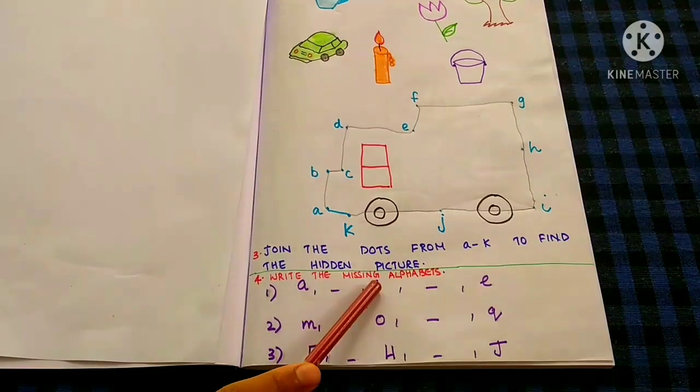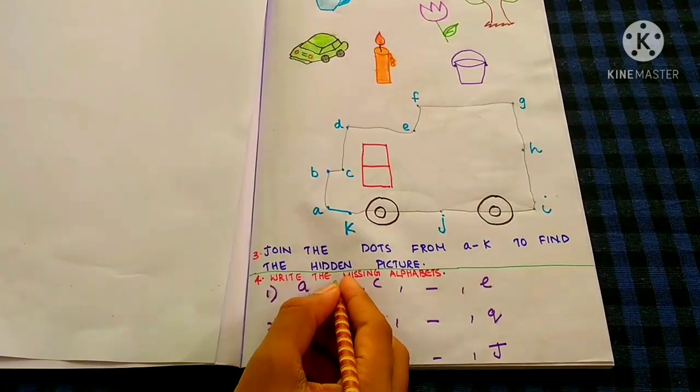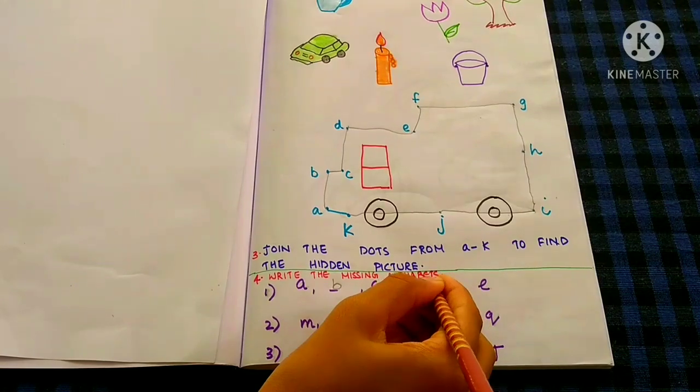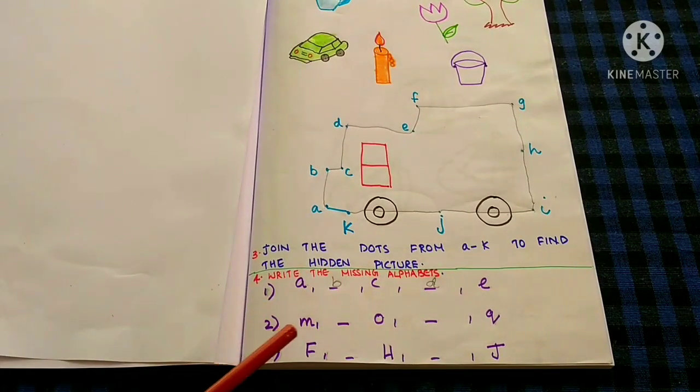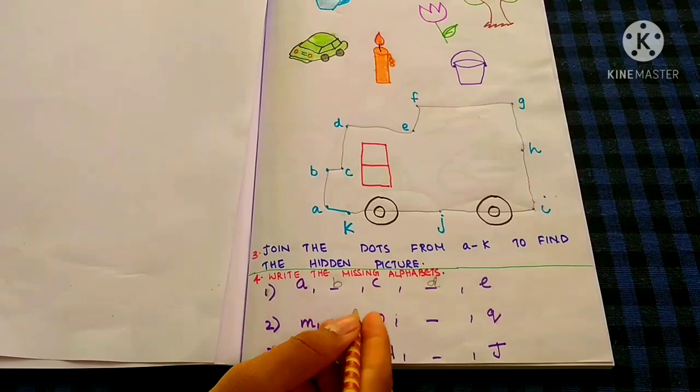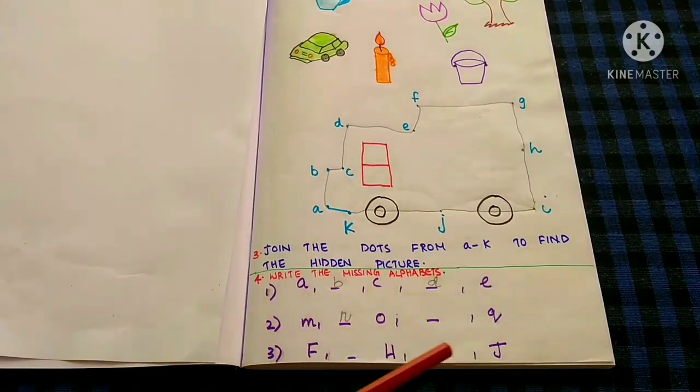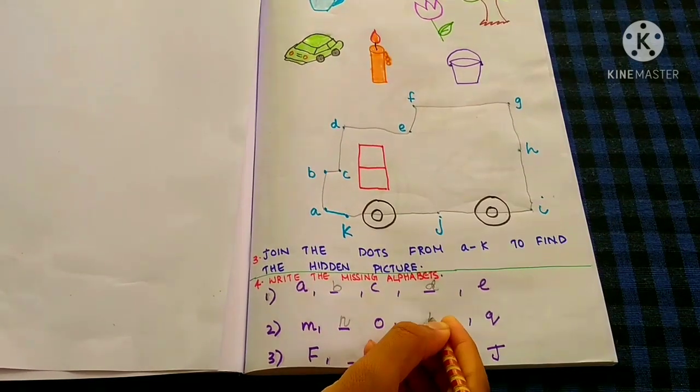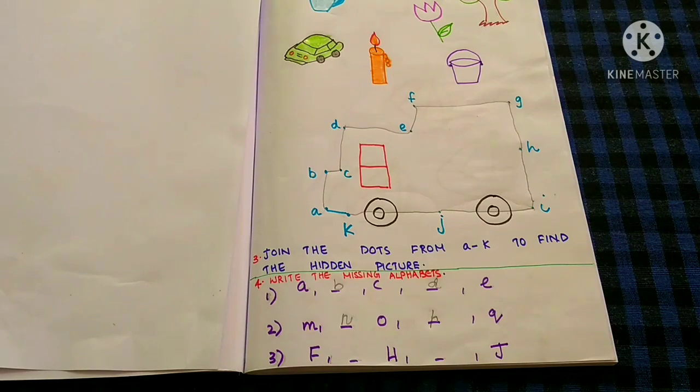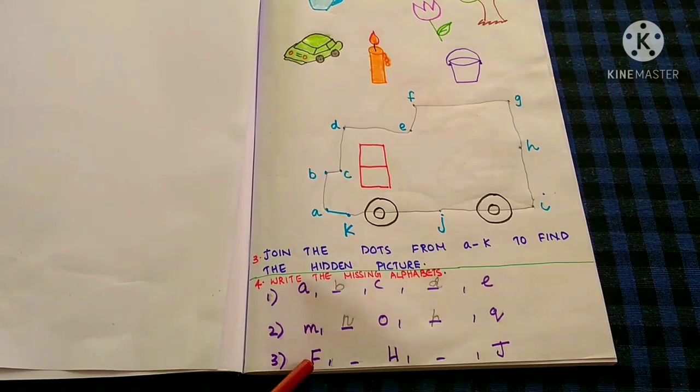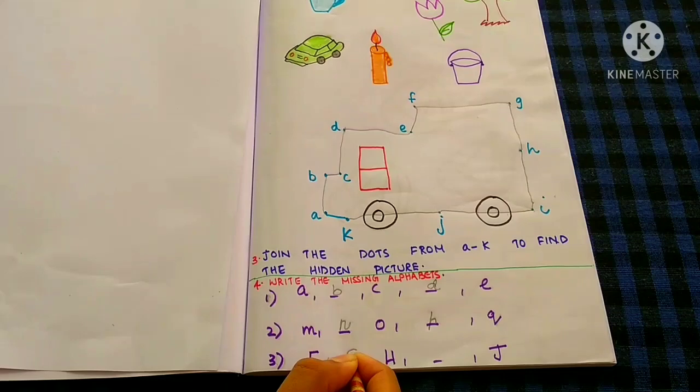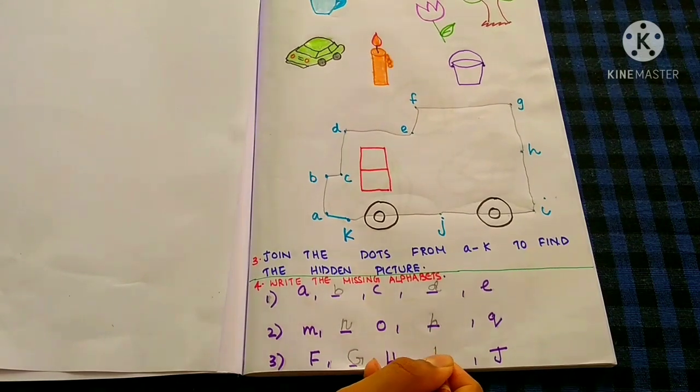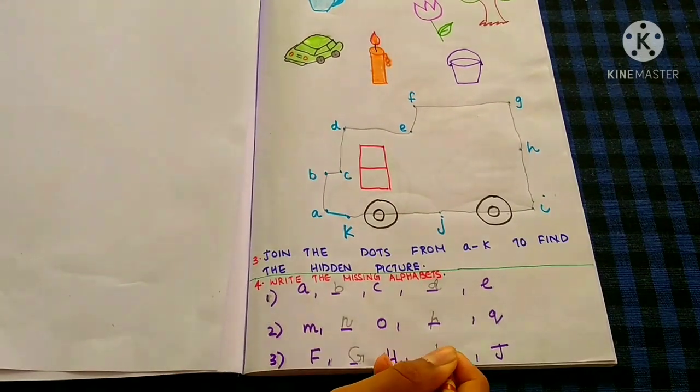Write the missing alphabet. A B C D E, M N O P, Q, F G, H I, J.